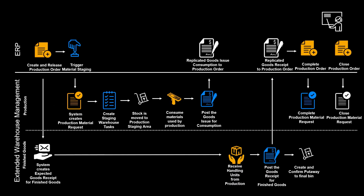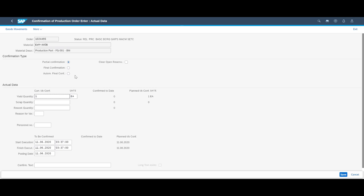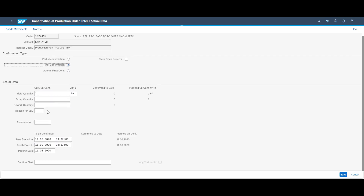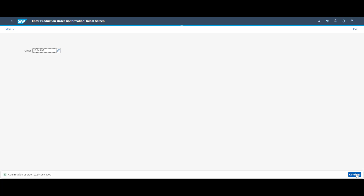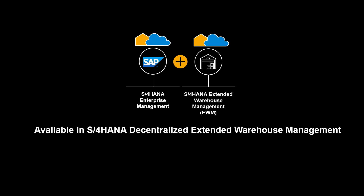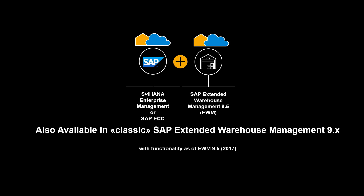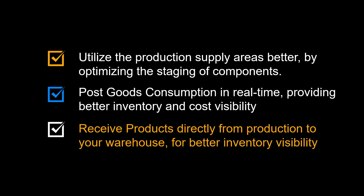We will end this demo by completing the production order. Completion is done by opening the production order in the Order Confirmation app. We select the proper confirmation type, set it to final confirmation, confirm the output quantity of one unit, and save. We end by posting the goods movement in the system. The functionality shown in this video is available in S4 HANA Extended Warehouse Management, embedded and decentralized. It is also available in classic SAP Extended Warehouse Management 9.x. To recap the benefits: you can utilize the production supply areas better by optimizing the staging of components, post goods consumption in real time for better inventory and cost visibility, and receive products directly from production to your warehouse for better inventory visibility.